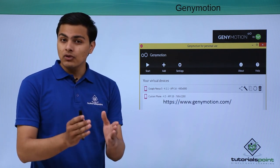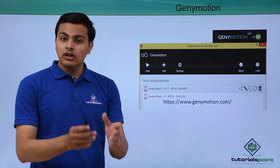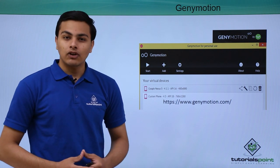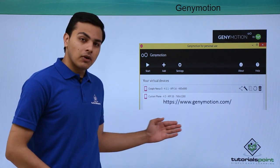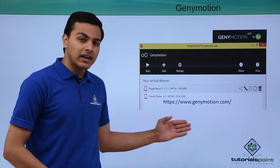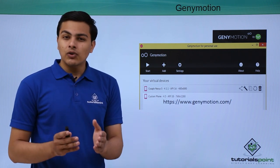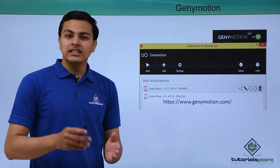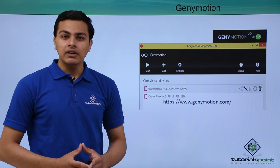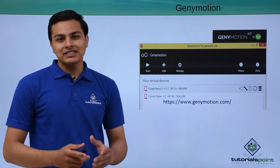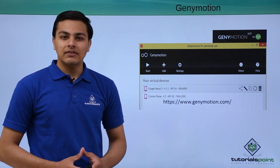The last thing we need is Genymotion. Genymotion is one of the fastest Android emulators, which we will use in order to run our Android testing environment. You can download Genymotion from their official URL: genymotion.com. Once we have downloaded all three things, we will start testing our Android application.